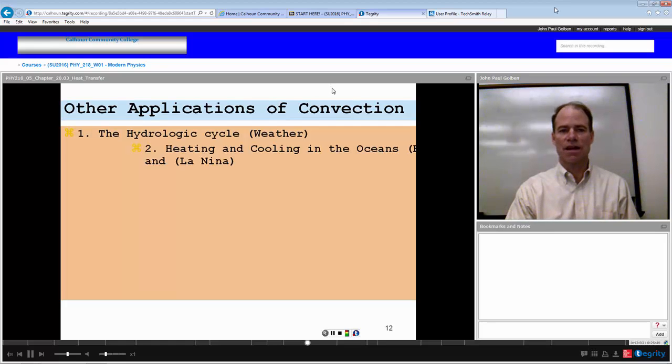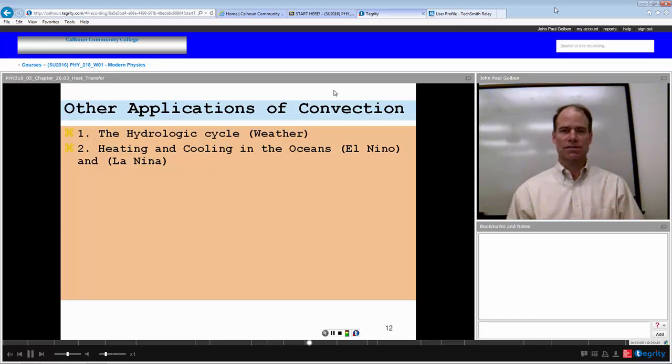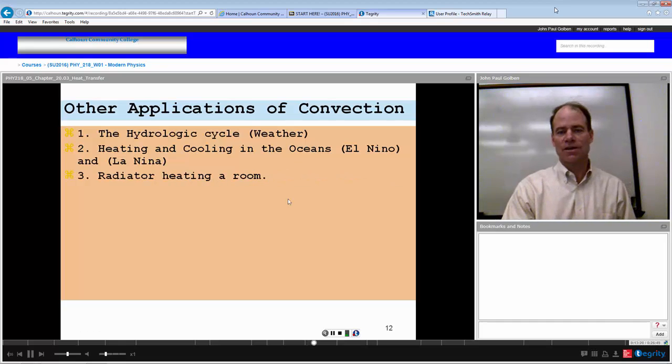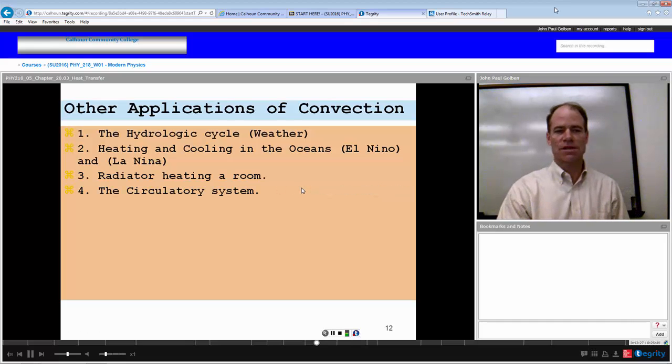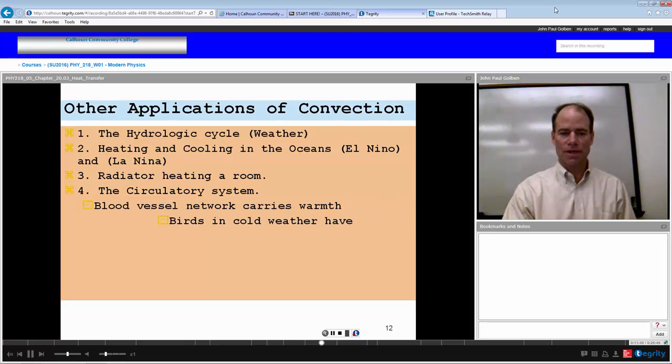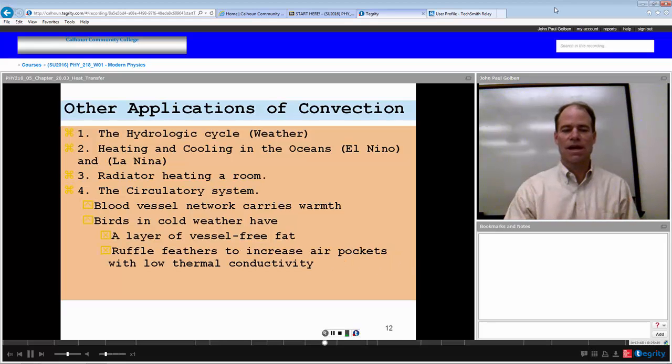Other applications of convection: the hydrologic cycle, weather in general, where one area of the earth is heated up and air rises causing storms to form, and then other air moves in, the winds as a result. Heat and cooling in the oceans, El Niño and La Niña are actual convection of heated or cooled water. Radiator heating the room, we just talked about that. Circulatory system within the human body is actually convection of warm blood, and that can heat the body as well. So the blood vessel network would carry warmth. Birds actually have a layer of vessel-free fat, which allows them to stay insulated. And they can ruffle the feathers in order to increase their insulating properties, get low thermal conductivity, allow them to stay warm that way.